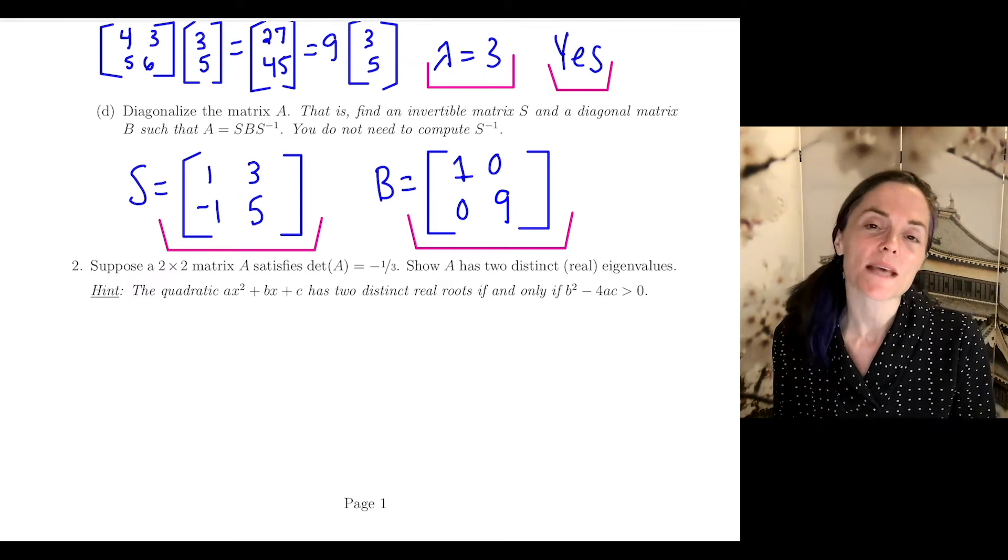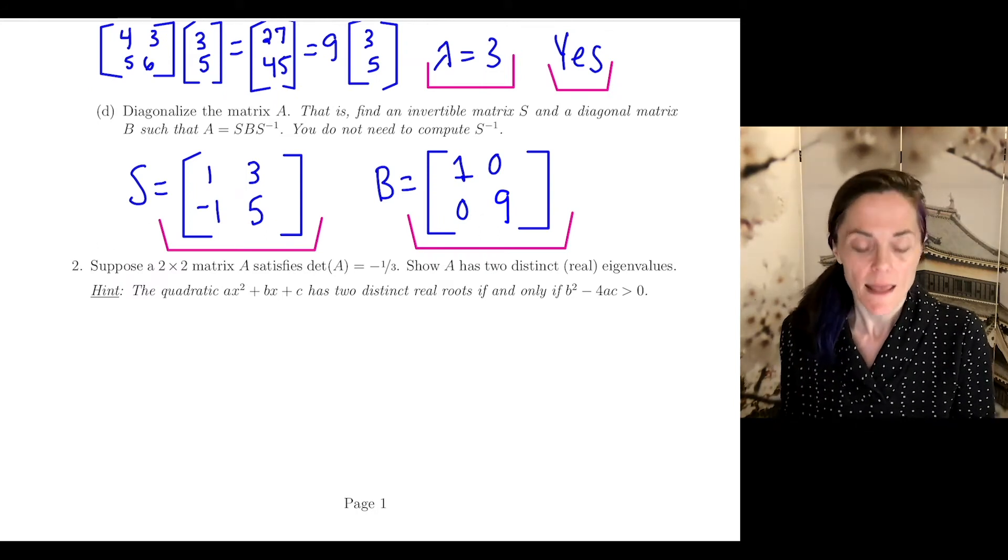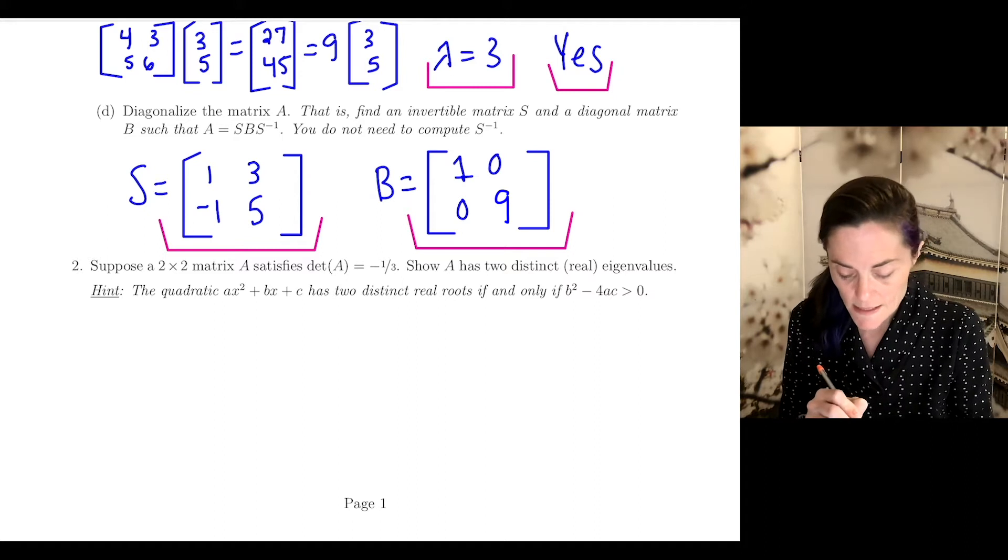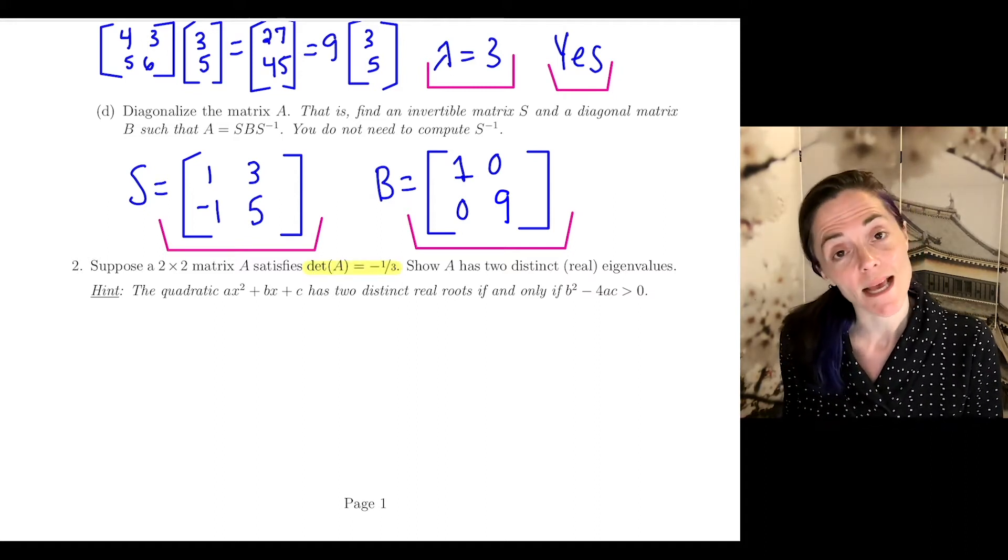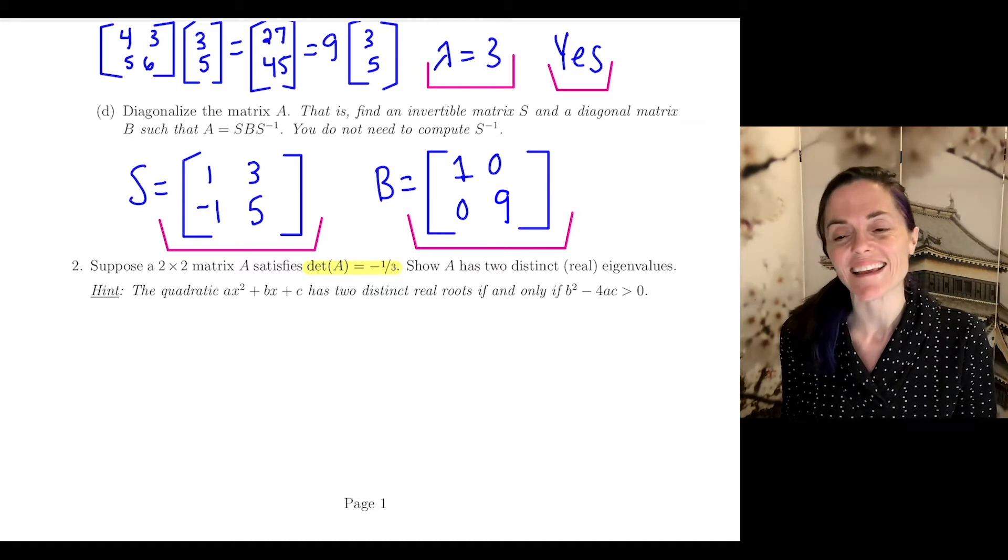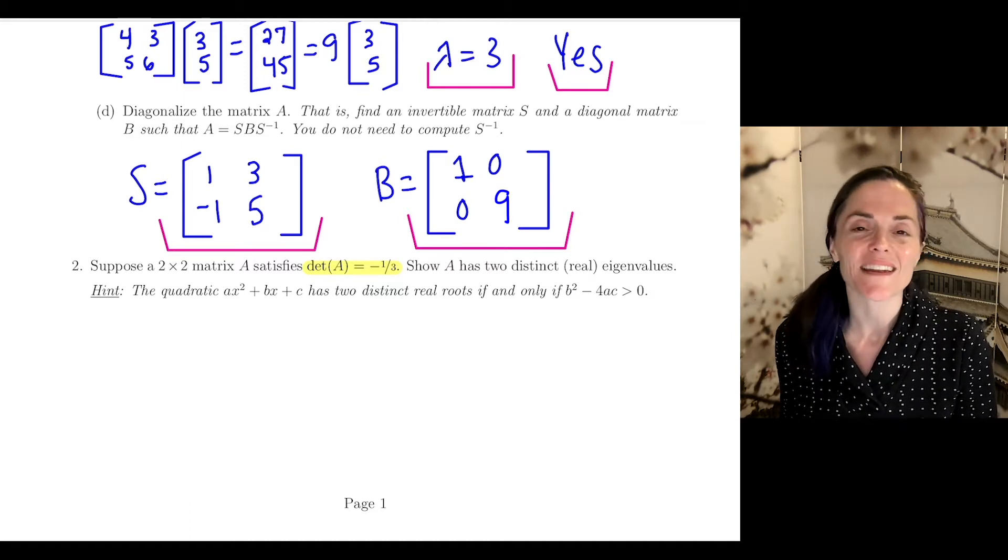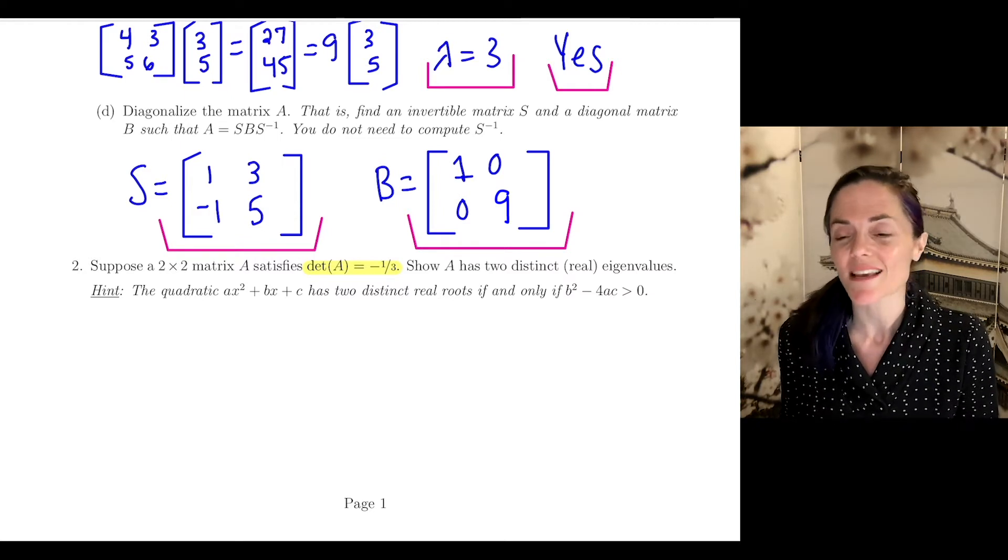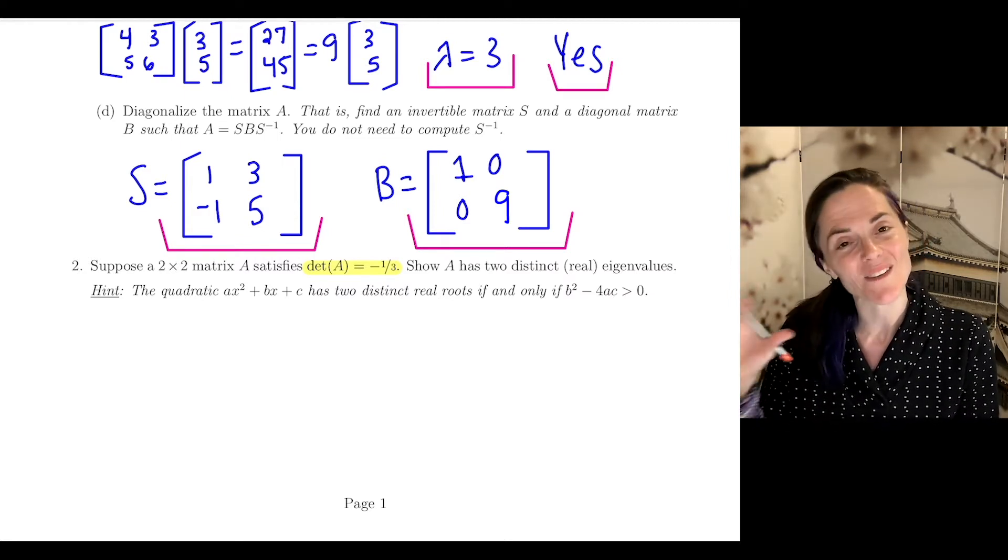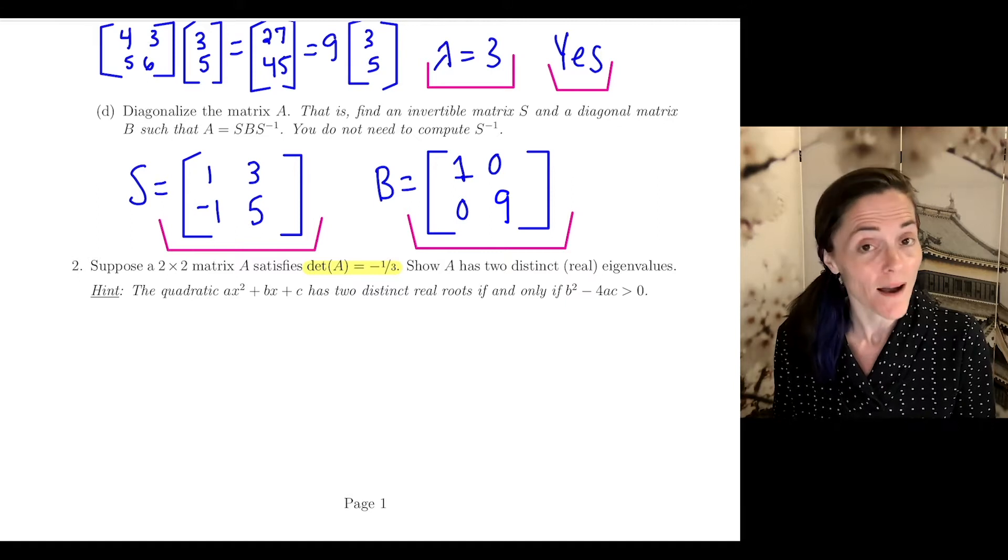Number two: suppose A is a two-by-two matrix and the determinant of A is negative one-third. We want to show that A has two distinct real eigenvalues, and we're given a hint that a quadratic has two distinct real roots if and only if the discriminant B² - 4AC is strictly positive.